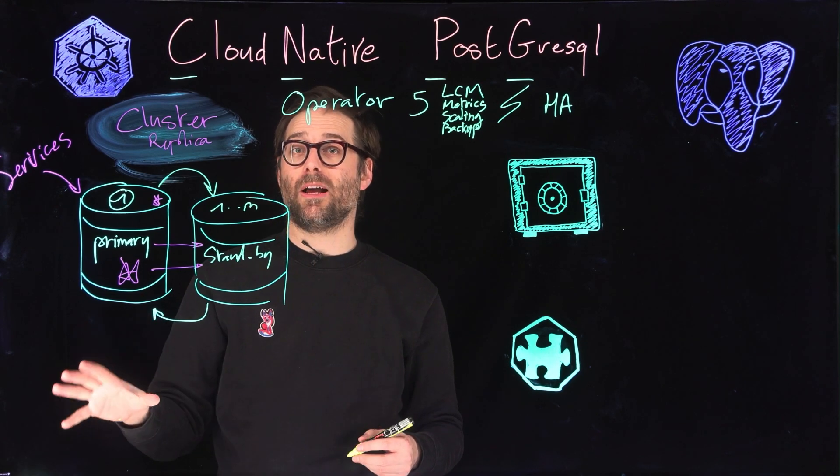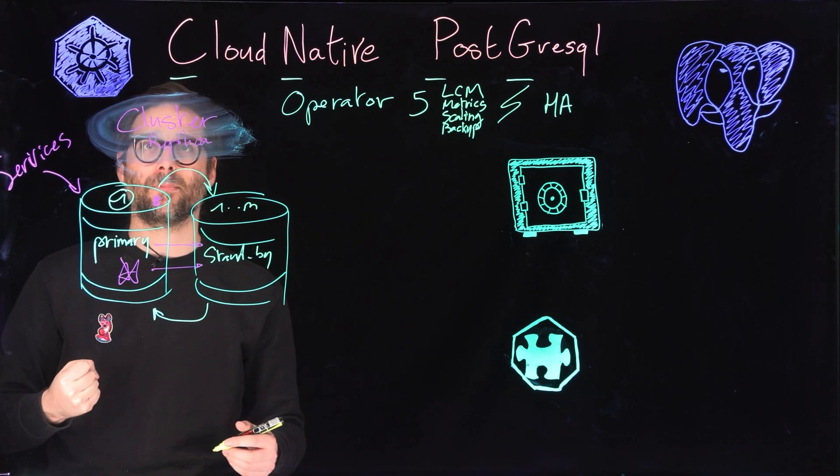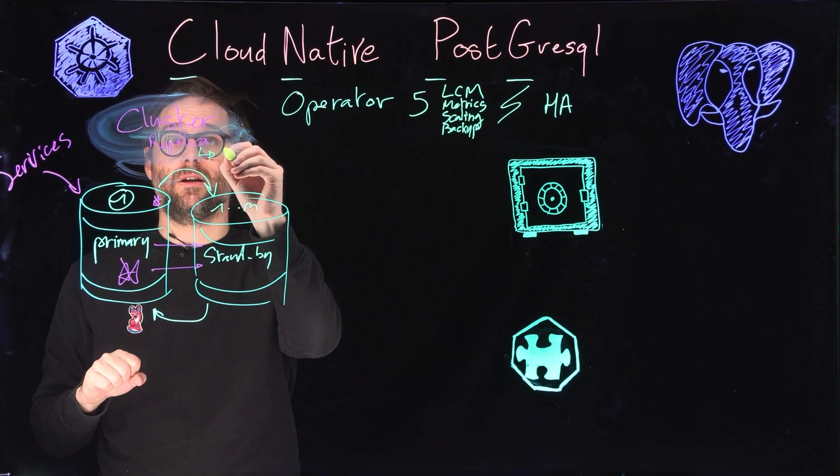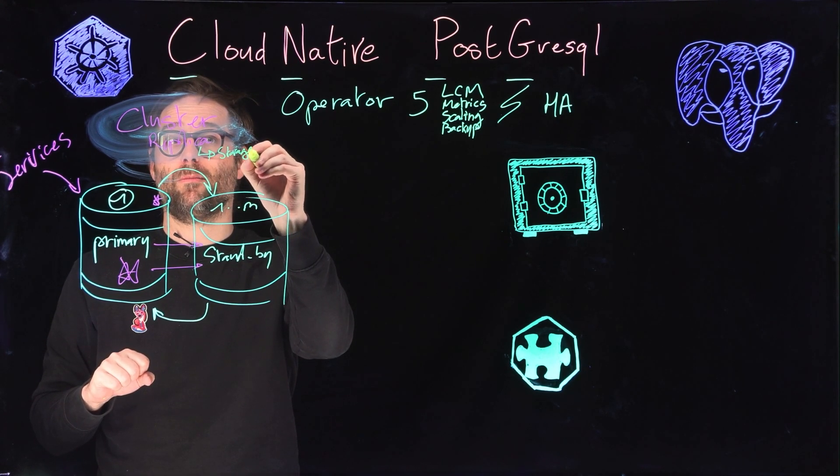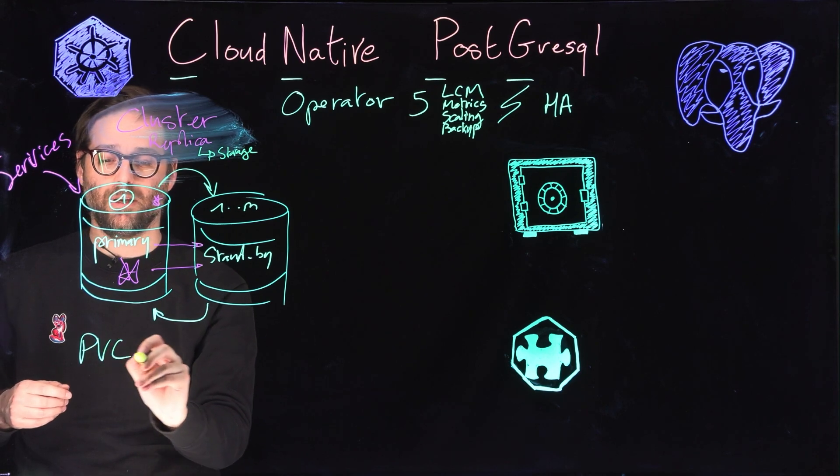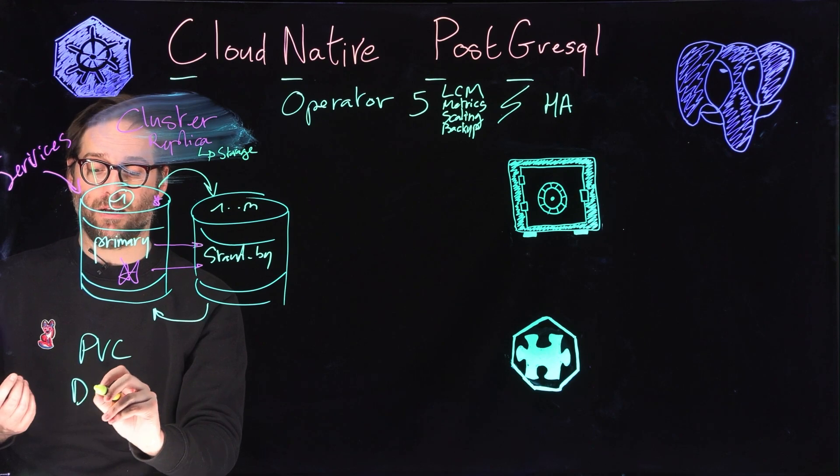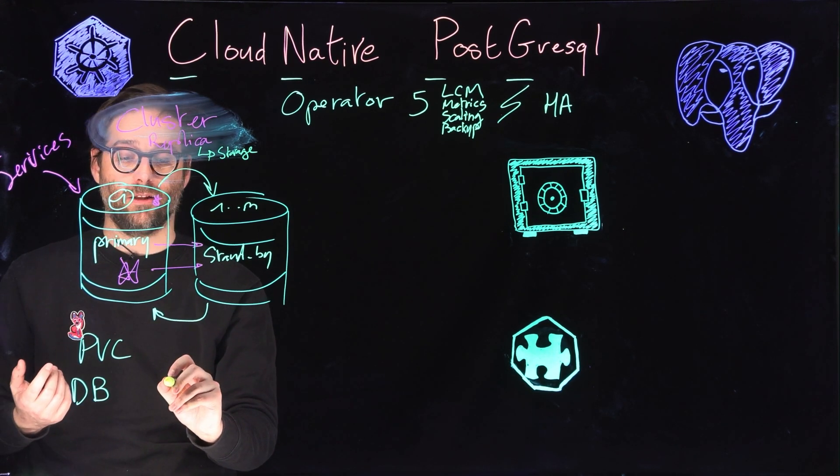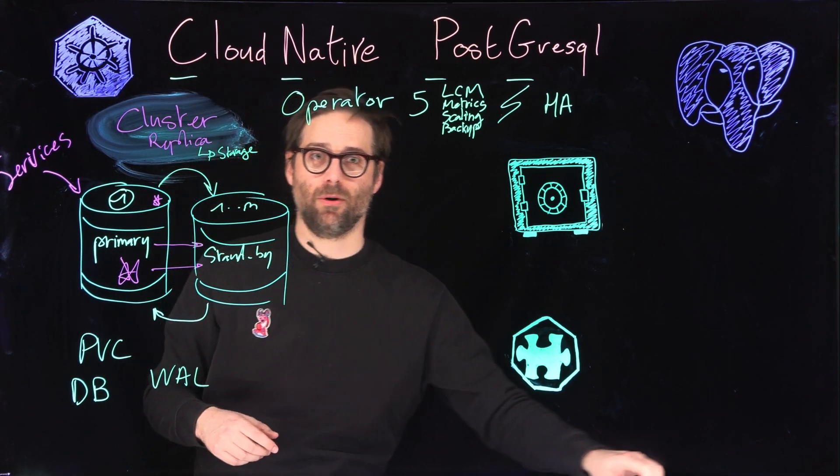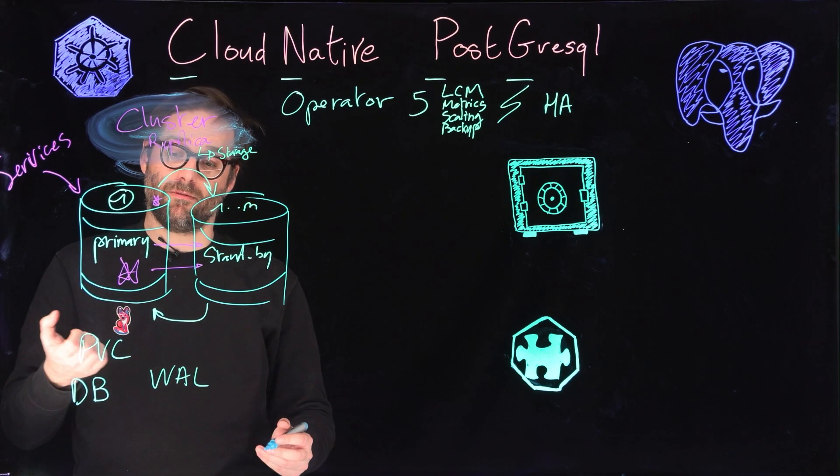Another super important aspect of databases are, of course, storage and persistent data. Directly from my cluster CR, I can define storage classes and PVCs for my data. By default, one PVC can be created for my data file or my DB and also for my write-ahead log. Super important here, WAL, write-ahead log, to ensure the durability of my database.